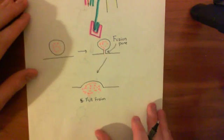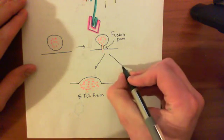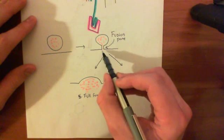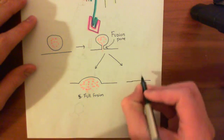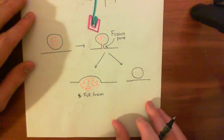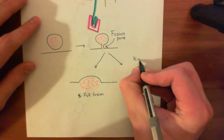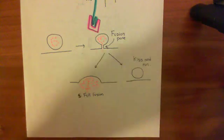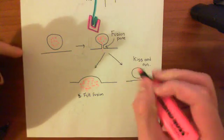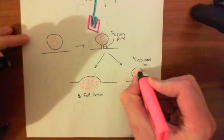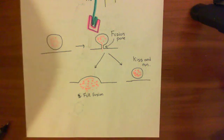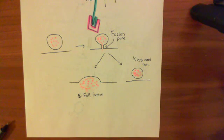Alternatively, what can happen is something known as kiss and run. Basically, the fusion pore will form, it'll release a tiny bit of neurotransmitter, but then it just closes and collapses on itself, and the vesicle goes back to being docked. So the synaptic vesicle forms a fusion pore, releases a tiny bit of neurotransmitter through that fusion pore into the synaptic cleft, but then doesn't undergo full fusion. Instead, it closes the fusion pore off and returns back to just a synaptic vesicle docked at the plasma membrane.